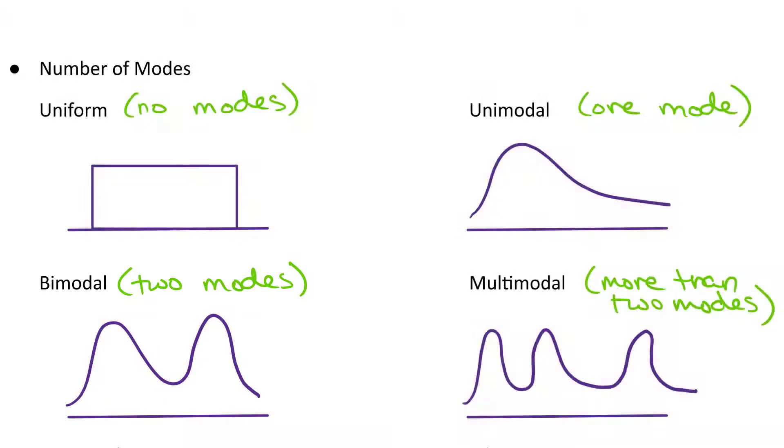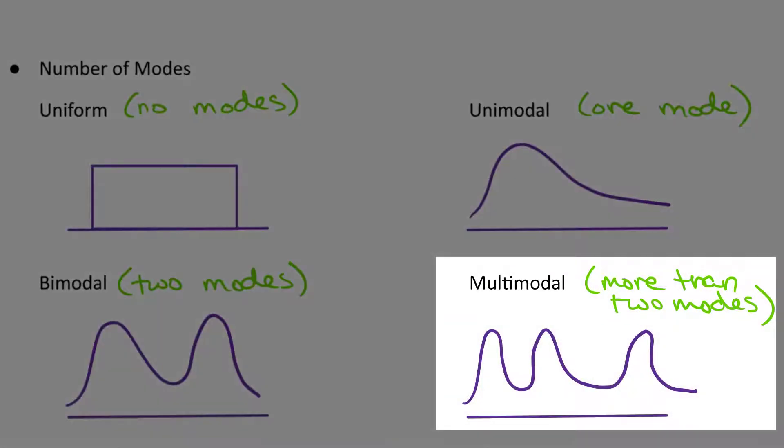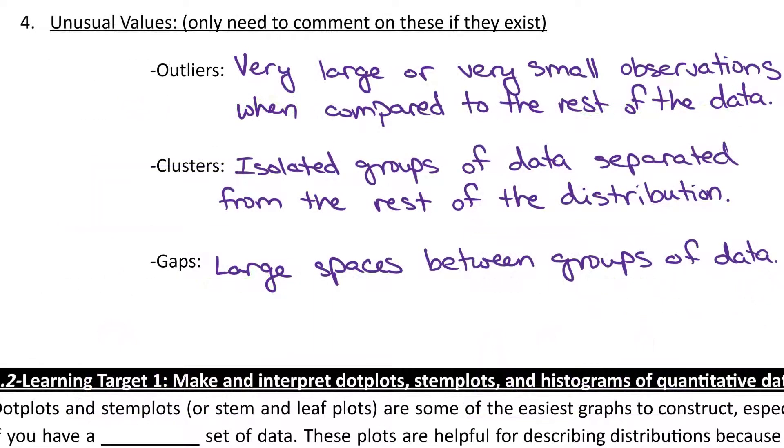Bimodal, two peaks, and multimodal are more than two. So, in this example, we have three modes. Last, if there are any unusual values, we do need to comment on these. Outliers, clusters, and gaps are what we'll focus on.